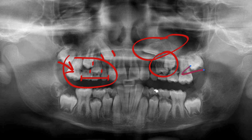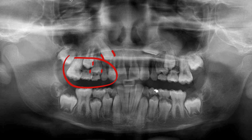A lot of times these posterior teeth will mesialize when there's more room due to impactions or crowded-out teeth. That's really about the upper arch that I wanted to bring to your attention. These days you see a lot of these impactions and poor eruption paths in children.